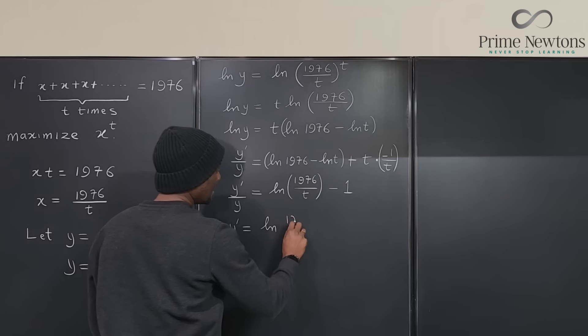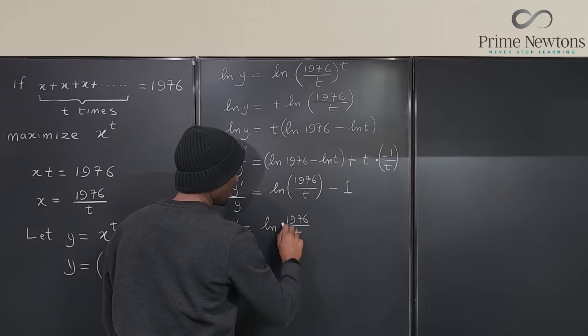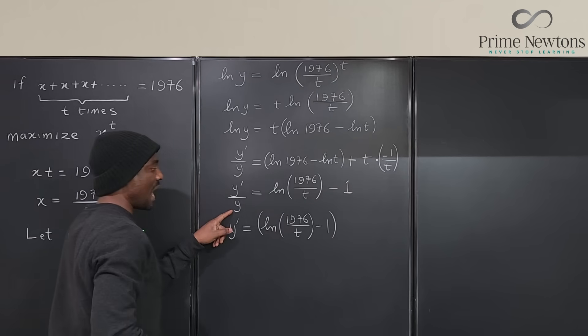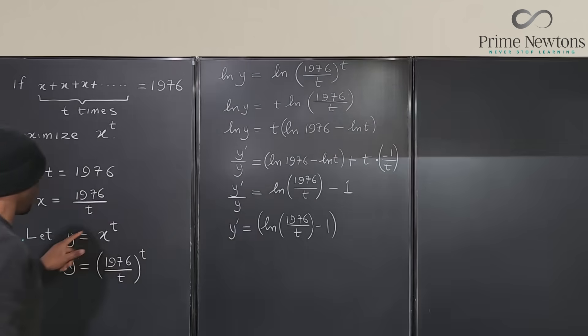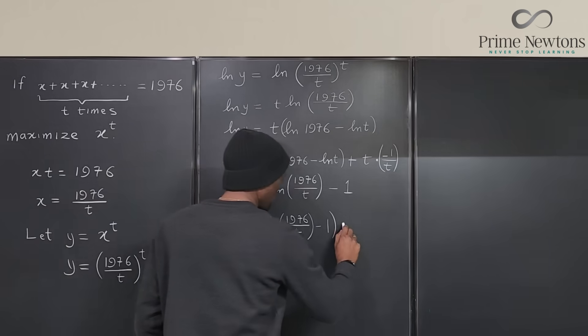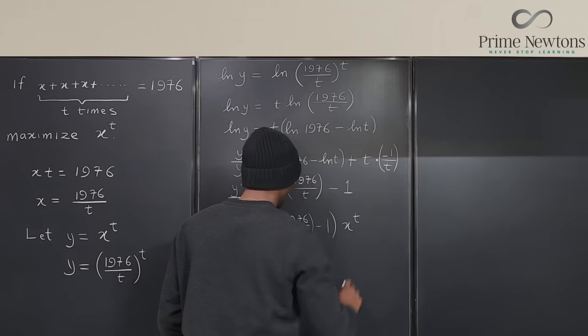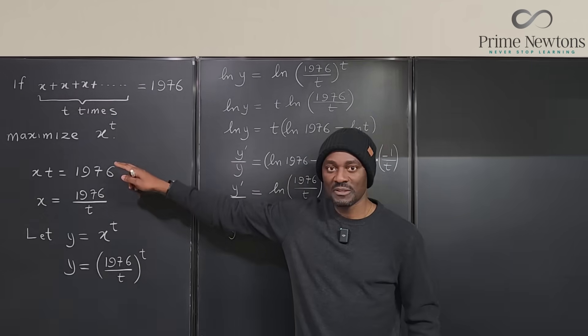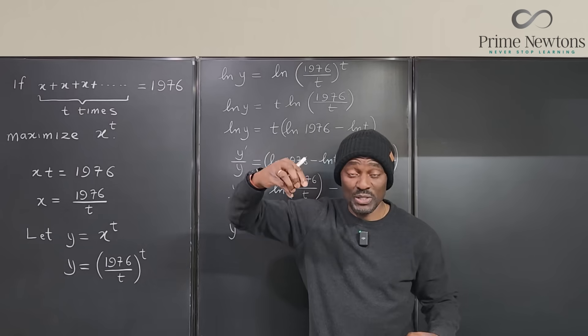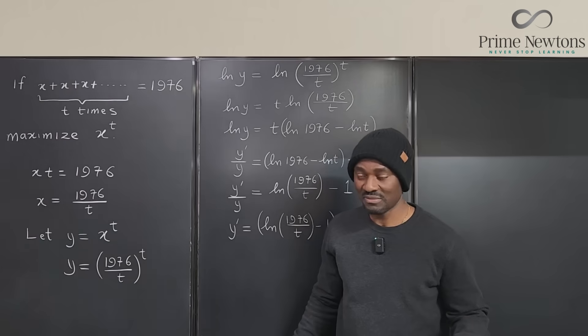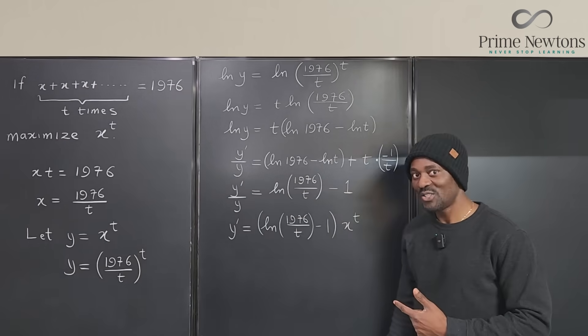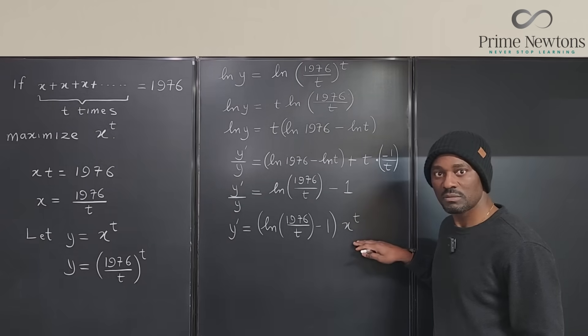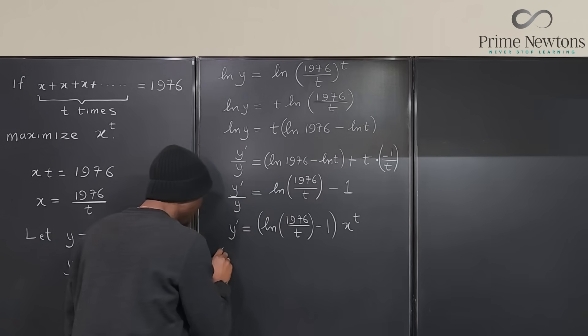So ultimately Y prime will be equal to, if I multiply both sides by Y, it's going to be LN of 1976 over T minus one multiplied by Y. But what did we say Y was from the beginning? We said Y is X to the T, so this is going to be times X to the T. Now remember we're doing optimization, we're trying to maximize. At the maximum point, or the minimum point, in this case it's going to be maximum, the derivative is always equal to zero.